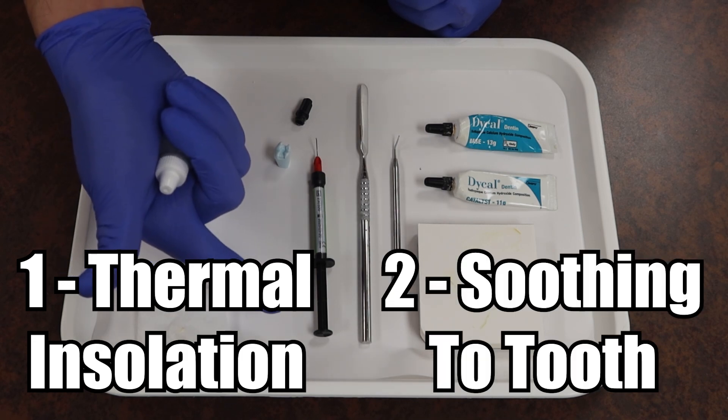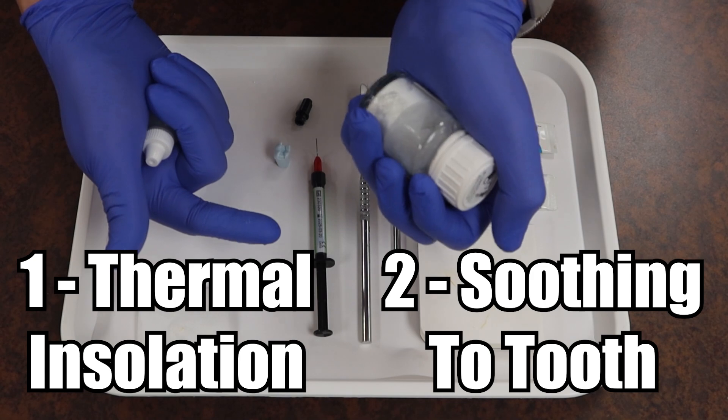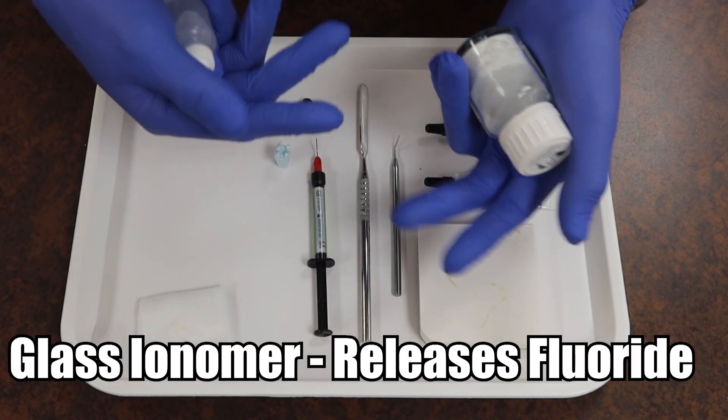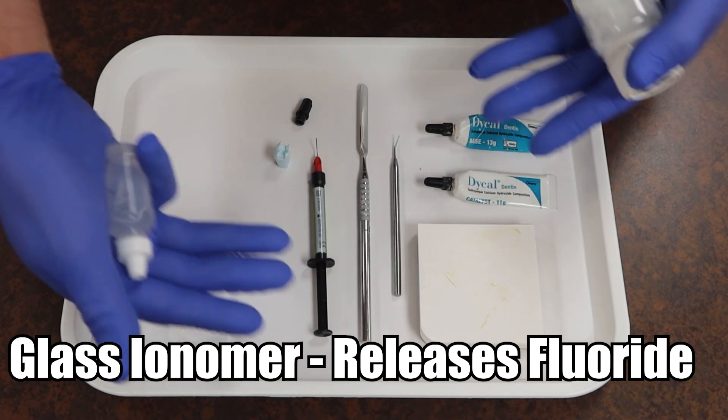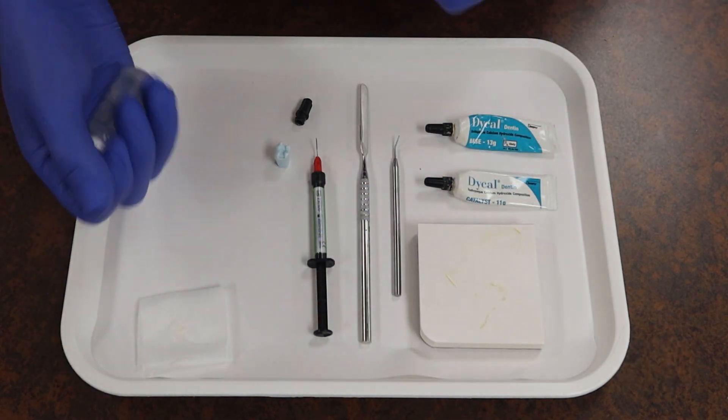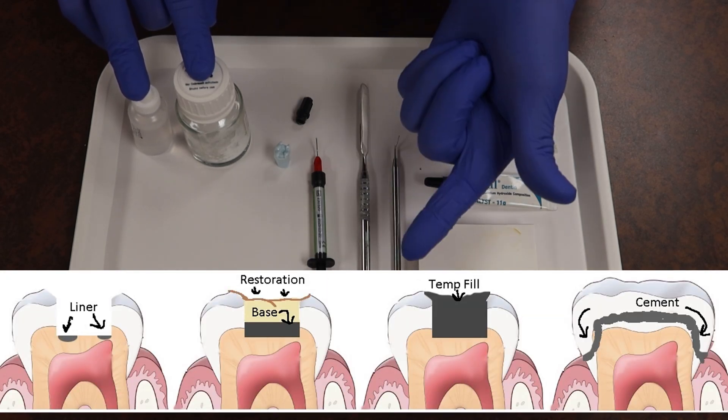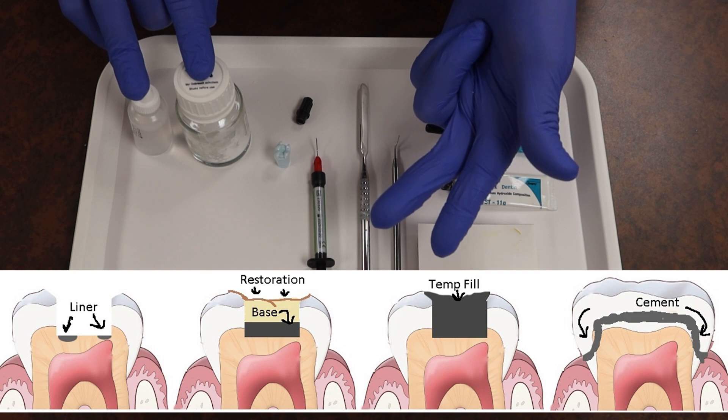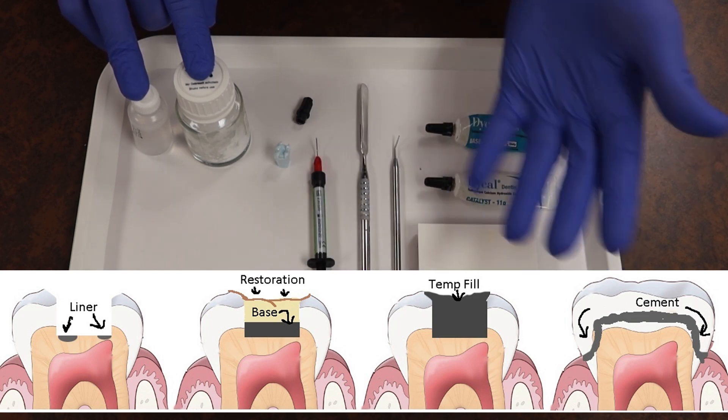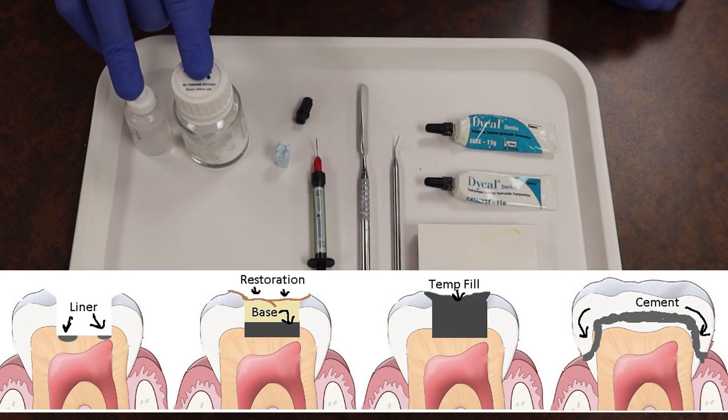For sensitivity properties, since glass ionomer has a beautiful thing of having fluoride releasing capabilities, the fluoride helps to soothe the tooth after this deep cavity is done. Another nice thing about glass ionomer, in general, is depending on which one that you get, you can use it as a liner, a base, a temporary filling material, a cement, and the list goes on and on with the capabilities that this is able to do.